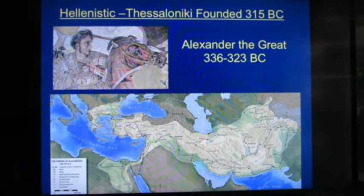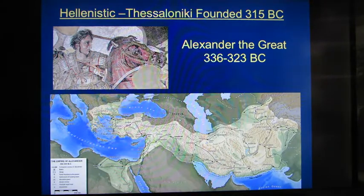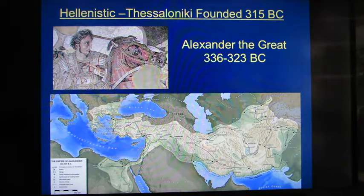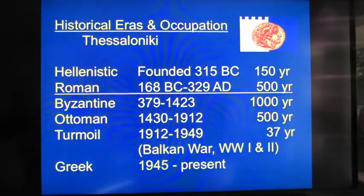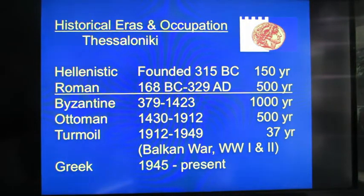Alexander the Great went all the way into India in his conquests, where he died at 32 years old. It's important to note that many of these territories which he did occupy were later relinquished because there was no follow-up leader to hold them. My next presentation will be talking about the Roman occupation of Thessaloniki from 168 BC to 329 AD.